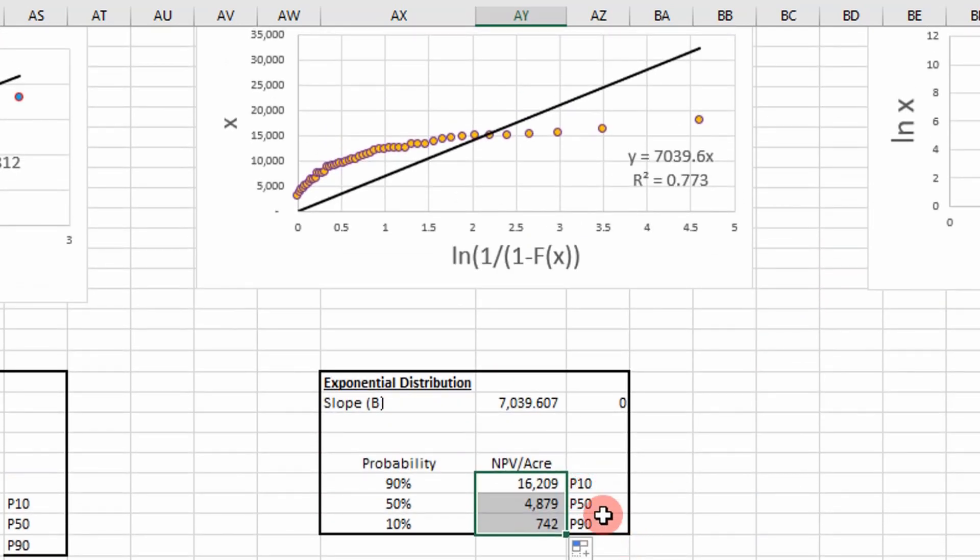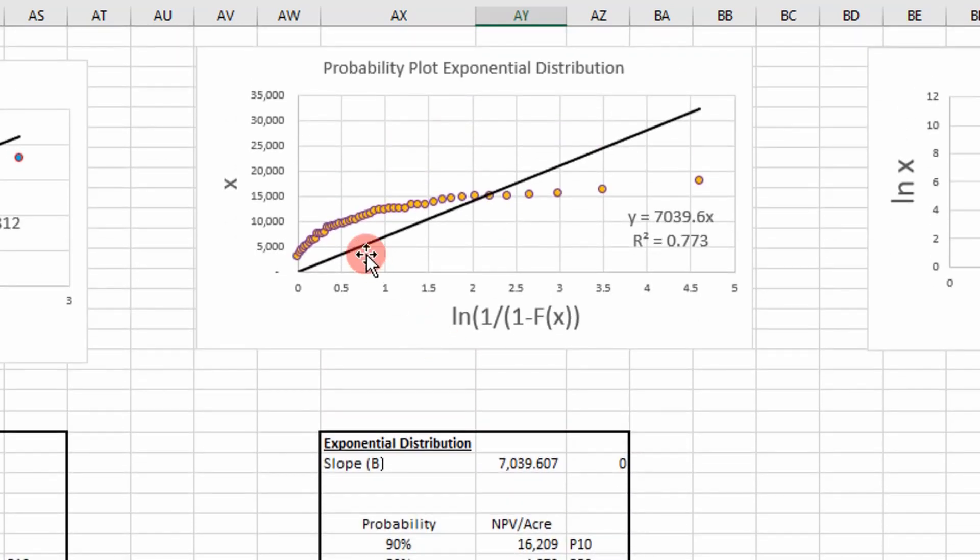And so that's our P10, P50, and P90 using the exponential distribution best fit line through our data. That's how you do that.